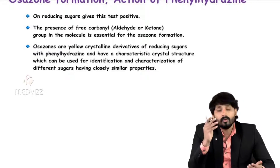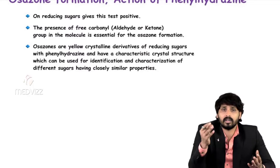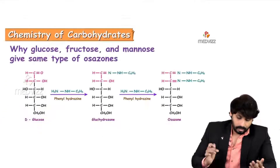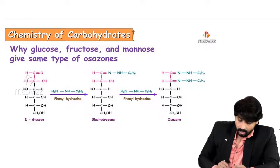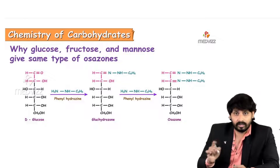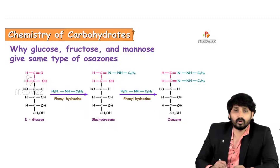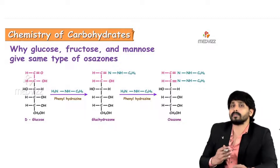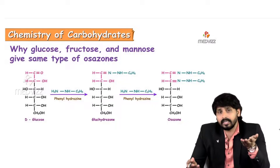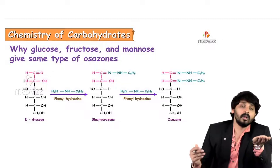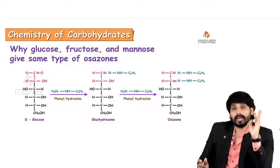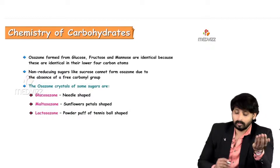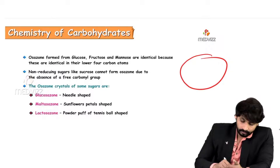Osazones are yellow crystalline substances. When monosaccharides or disaccharides are treated with phenylhydrazine, only the first two carbons are involved in the reaction. When glucose is treated with phenylhydrazine, it reacts with the first carbon to form glucohydrazone, and then a second treatment reacts with the second carbon to form the osazone. Phenylhydrazine reacts with the first two carbons regardless of whether it is glucose, fructose, galactose, lactose, or maltose.